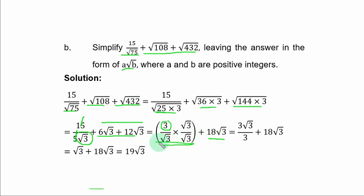So if you simplify here, you have 3 root 3. Now root 3 times root 3 is 3, so 3 cancel 3. So you have root 3 plus 18 root 3, and that is 19 root 3. Now in the form of A root B, you can say that A is equal to 19 and B is equal to 3, if you were asked to find the value of A and B.